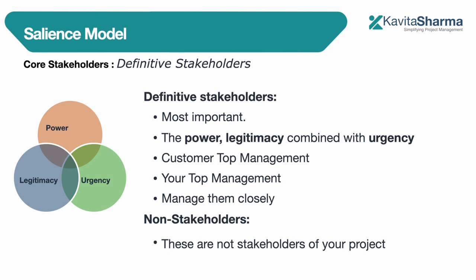The final type is definitive stakeholders — they possess all three dimensions: power, legitimacy, and urgency. These are the most important stakeholders. Think of the top management of your performing organization or your customer company. Manage them very closely, build trust and relationship, work with their demands, and ensure they remain engaged.